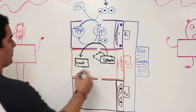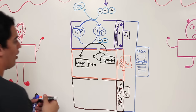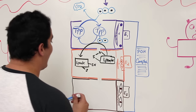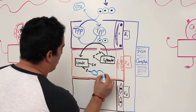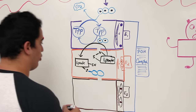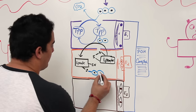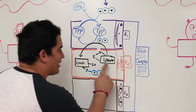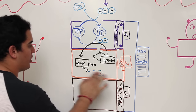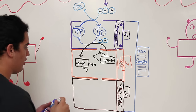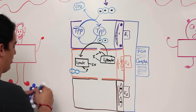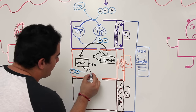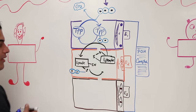When lipoate reacts and takes on the acetyl group, one sulfur becomes a thiol and the other sulfur has the acetyl group attached to it. So now lipoate carries the two-carbon acetyl group.